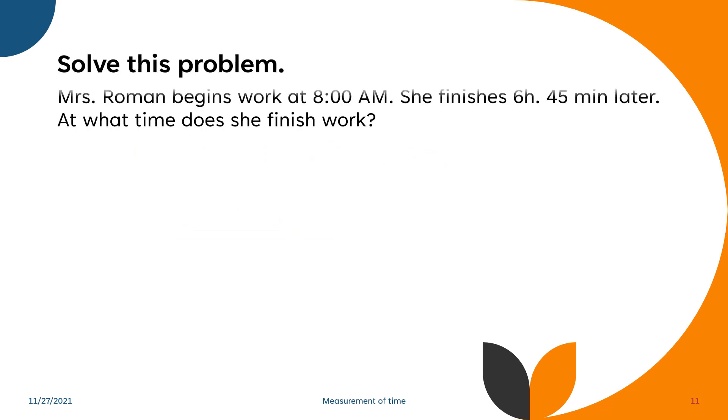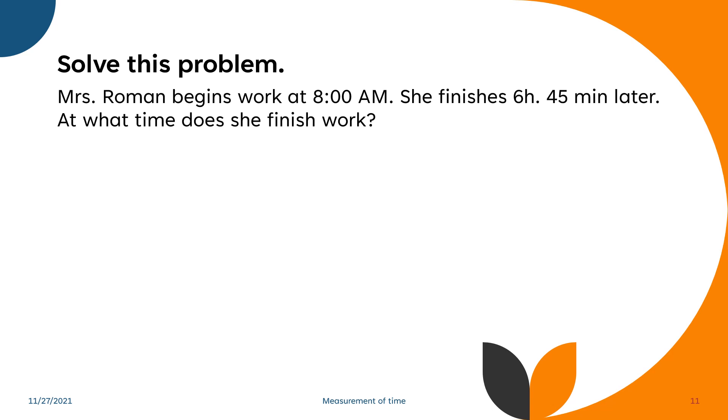Let's solve this problem. Mrs. Roman begins work at 8 a.m. She finishes 6 hours and 45 minutes later. So if you are going to write it one by one: 8 to 9, 9 to 10, 10 to 11.